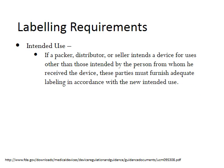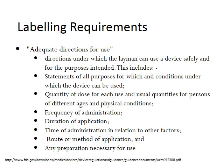The next thing that needs to be on the label is the intended use. If the seller intends the device for uses other than those intended by the person for whom they received the device, those parties must furnish adequate labeling in accordance with the new intended use. There should also be adequate directions for use.